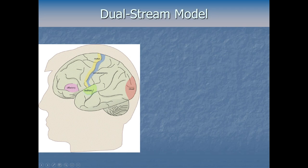Neural signals that come from your ears first go to the primary auditory cortex in green here — it's kind of at the top of our temporal lobes. Signals for touch and other bodily senses — somato means body — go to the blue area, the primary somatosensory cortex.